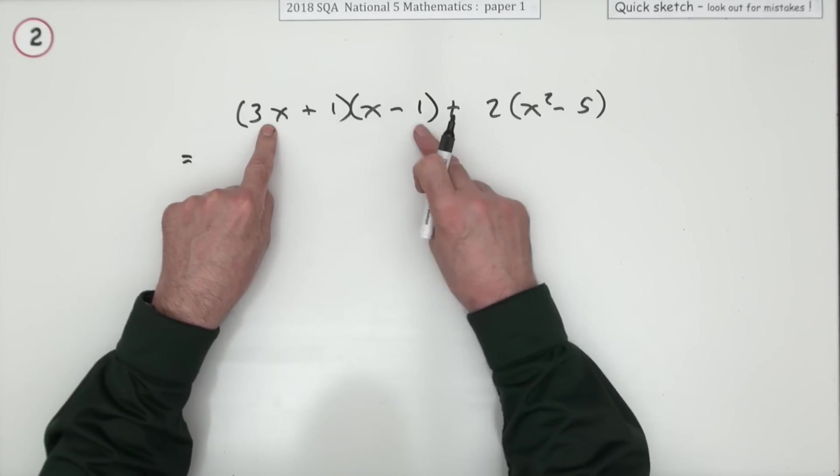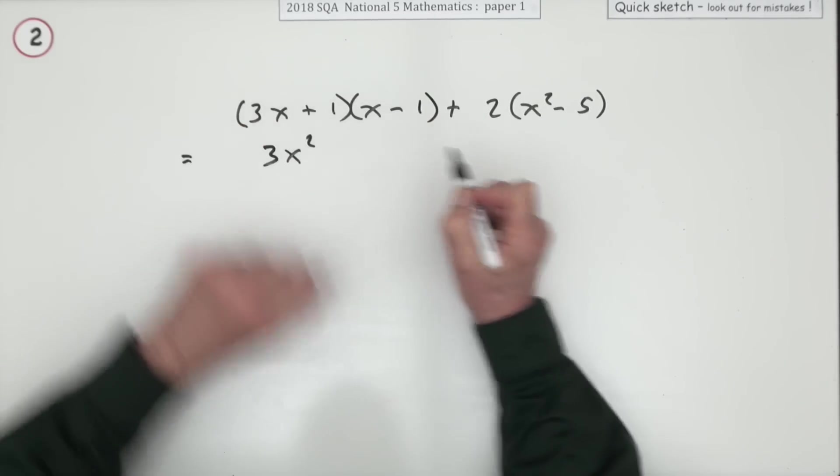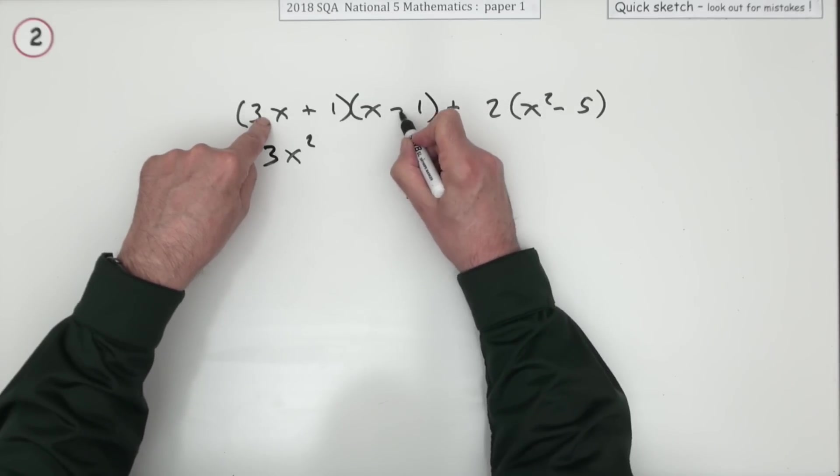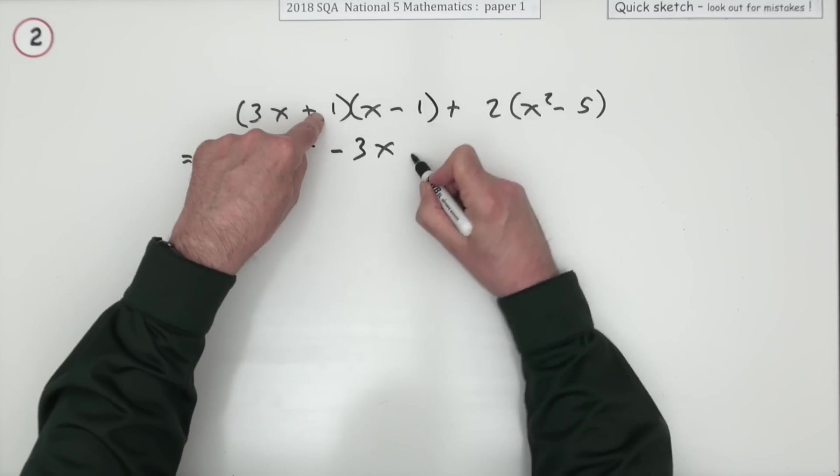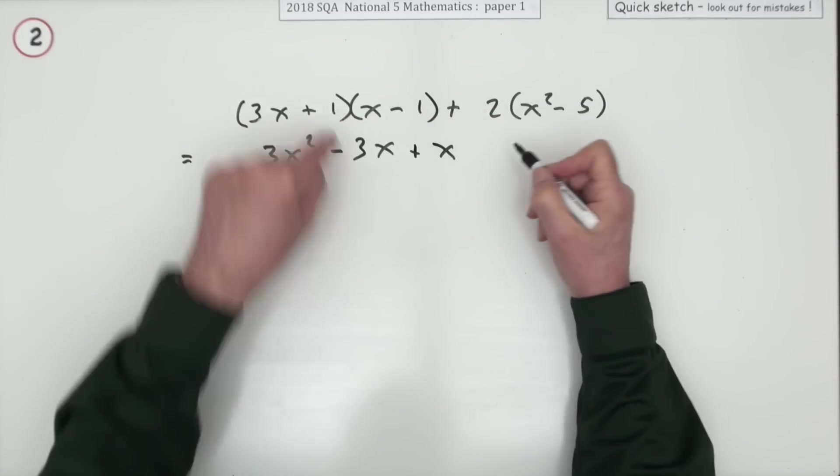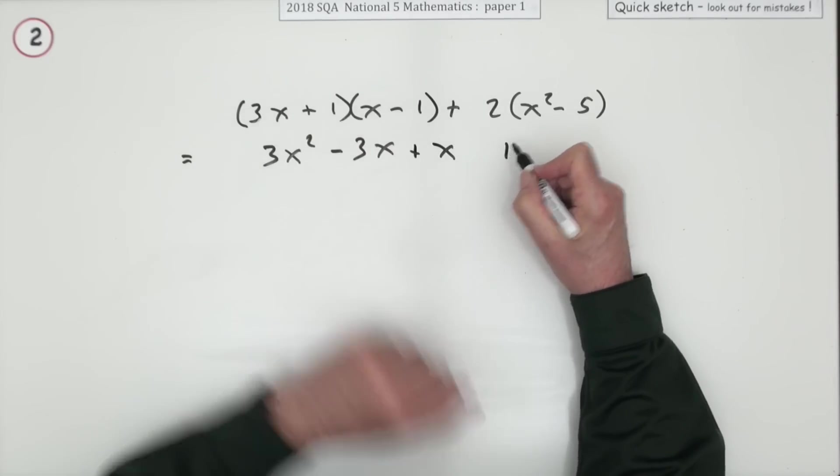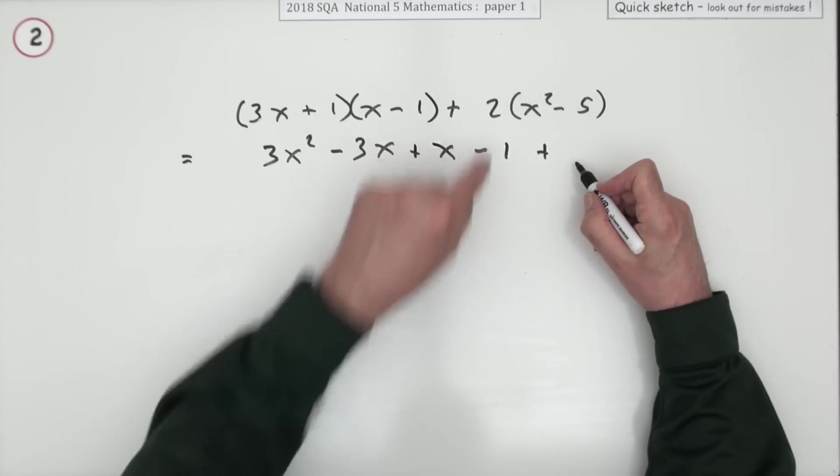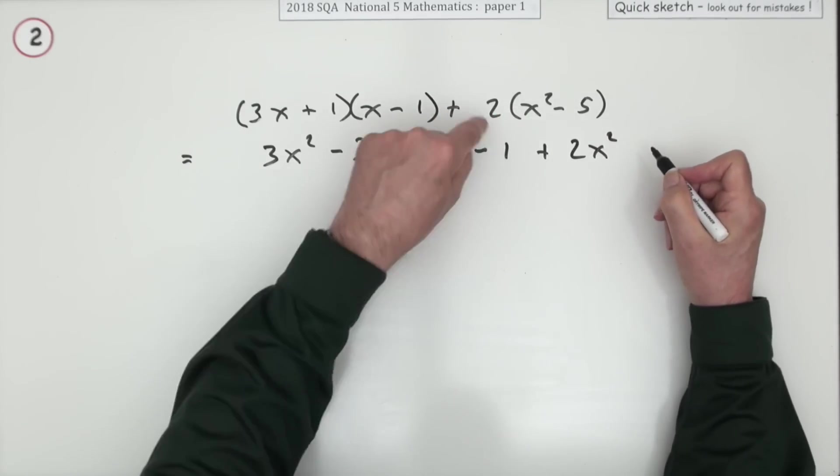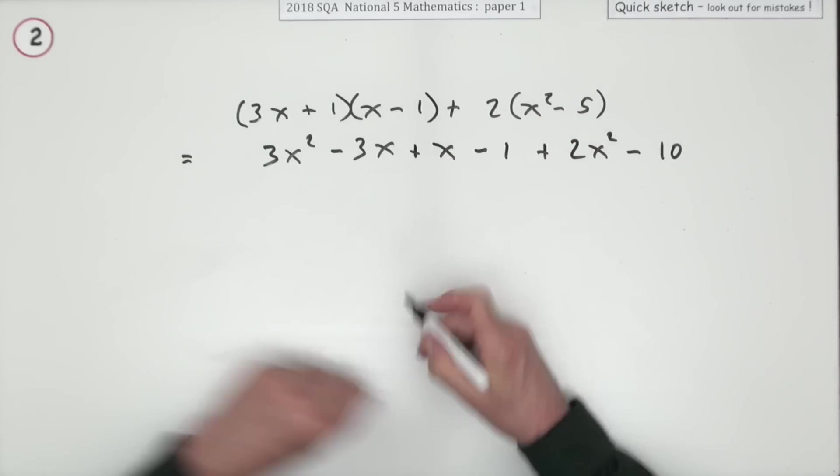3x is going to multiply both of those. So it'll be 3x times the x, that's 3x squared. And 3x times 1 is 3x, but it says subtract, so minus 3x. Now the 1 is going to multiply them both. 1 times x is x, 1 times 1 is 1. But that's negative and that's positive, so minus 1. The 2 wants to multiply both of them. So 2 times the x squared is 2x squared, and 2 times 5 is 10. That one's negative, so negative 10.